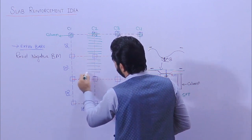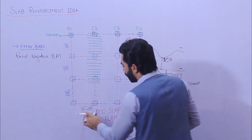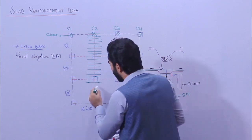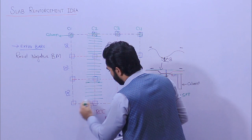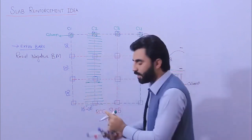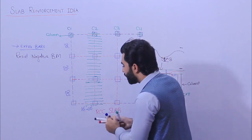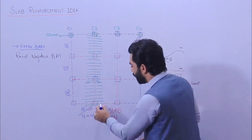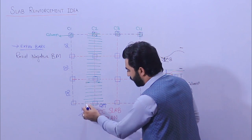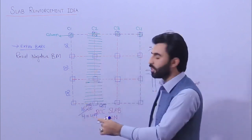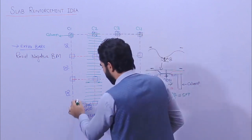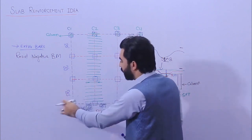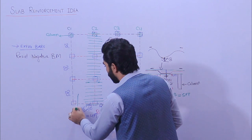For the 16-foot span, at each side we provide 4 feet — so 16 divided by 4 = 4 feet. The total cutting length of the extra steel rod is 8 feet, because 4 feet on each side. For the 20-foot span, we place the extra steel rod at 5 feet from each support — that's because 20 divided by 4 = 5 feet. So at 5 feet we are placing the extra steel rod.